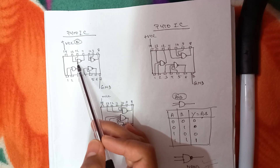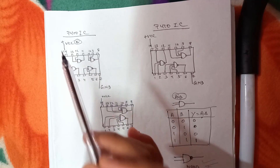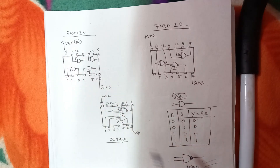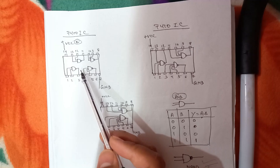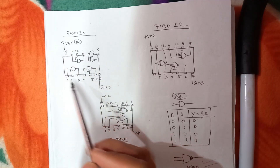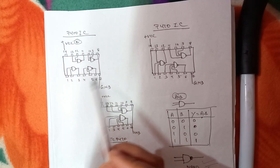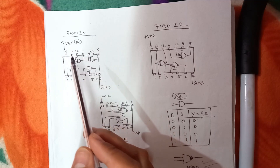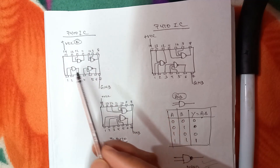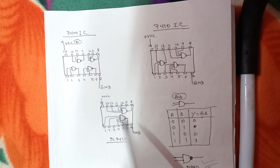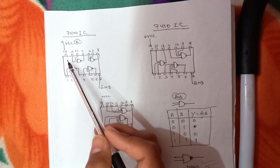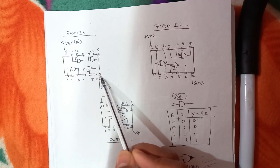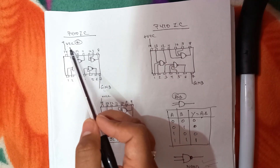Now let us see the 7400 IC, which has four different NAND gates inside it. This IC is not very complex. Before working with this IC, we need to check whether it is correct or not, since we use it for several purposes in our practical lab — including for MUX and DEMUX. The pins are numbered 1 through 7, where pin 7 is always ground and pin 14 is always given +VCC of 5 volts.